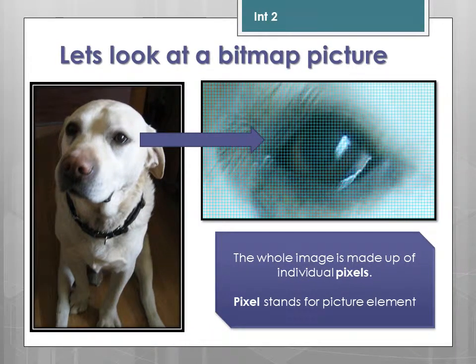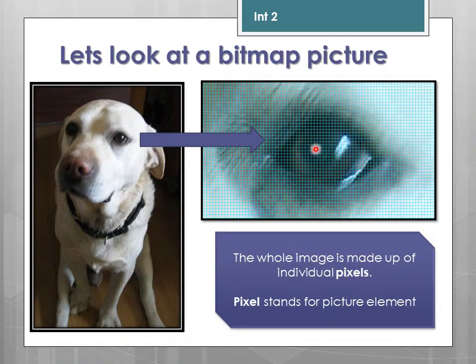Let's look at a bitmap picture. On the left-hand side here you have a picture of my dog. If you zoom in close enough — I've tried to help by putting grid lines there — you can see that the whole image is made up of individual pixels. Pixel actually stands for picture element.